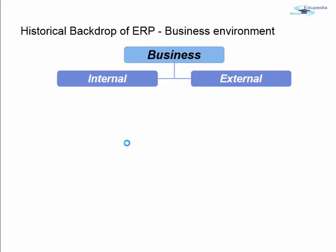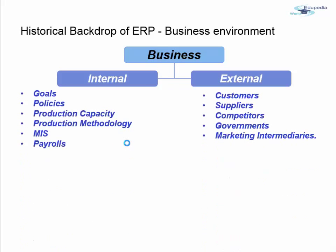The business environment consists of two factors: internal and external. Internal factors include goals, policies, production capacity, production methodology, MIS, and payroll. External factors include customers, suppliers, competitors, governments, and market intermediaries.